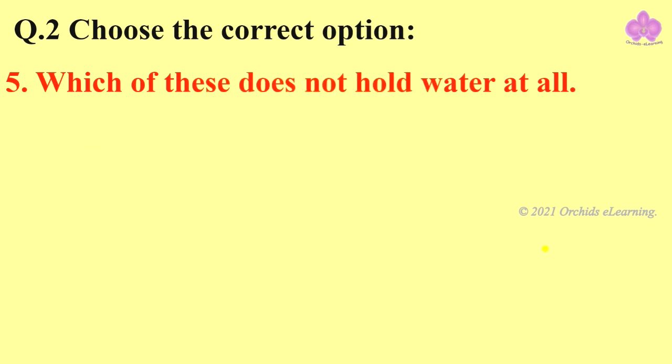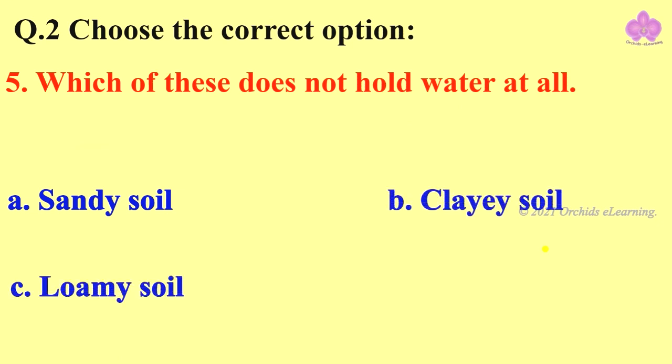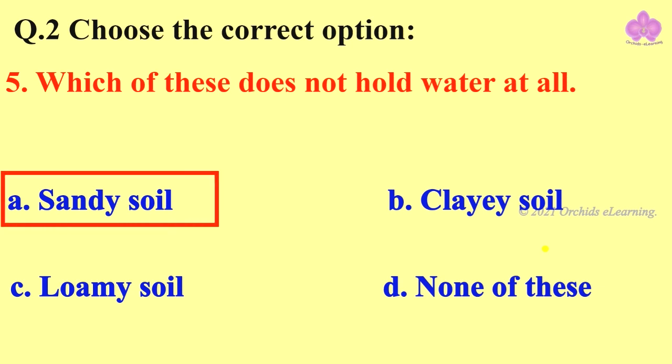Which of these does not hold water at all? A: sandy soil. B: clayey soil. C: loamy soil. Or D: none of these. Which of these does not hold water at all? It is A, sandy soil.